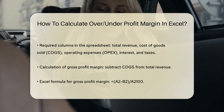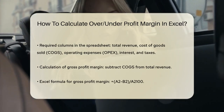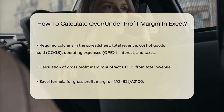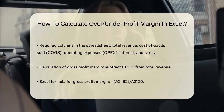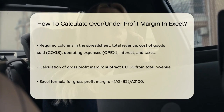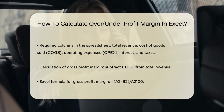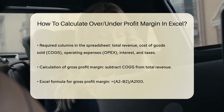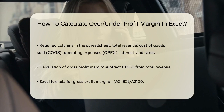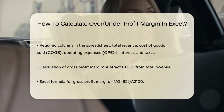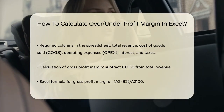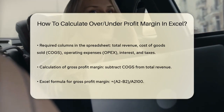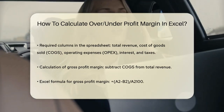For the gross profit margin, you calculate it by subtracting the COGS from the total revenue. So if your total revenue is $10,000 and your COGS is $4,000, your gross profit would be $10,000 minus $4,000, which equals $6,000. Then you divide this gross profit by the total revenue and multiply by 100 to get the percentage.